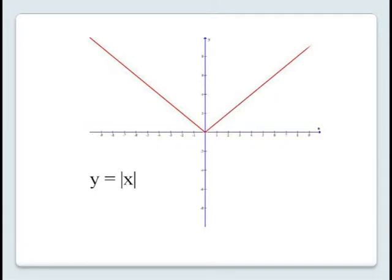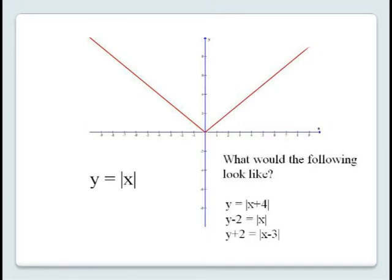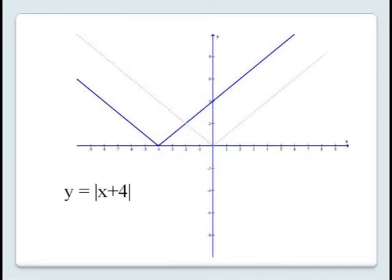Consider the following examples. Starting with the basic graph y equals the absolute value of x — the v-shaped graph shown here. Now suppose we wish to graph y equals the absolute value of x plus 4. We've replaced x by x plus 4, which results in a horizontal translation four units in the negative x direction. So we get the graph shown here in blue. The original is shown in light blue for comparison purposes.